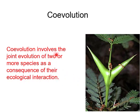Co-evolution is the joint evolution of two or more species through ecological interaction. The evolution of ecologically related species is sometimes coordinated such that each species exerts a strong selective influence on the other. Co-evolution may occur when species are competing for the same resource or during predator-prey interactions. In predator-prey relationships, natural selection favors the development of protective characteristics in prey species. Similarly, selection favors characteristics in predators that allow them to become better at catching and immobilizing prey.